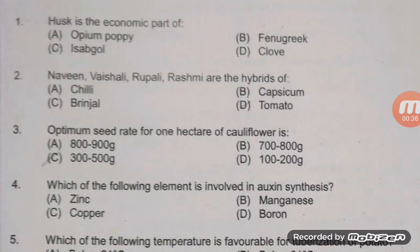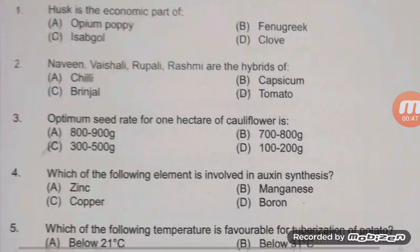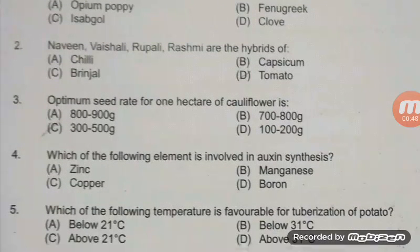Next question: the optimum seed rate for 1 hectare of cauliflower is — the right answer is C — 300 to 500 grams. Note that average, early, and mid varieties have different seed rates, so please clarify that distinction.